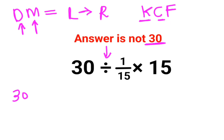C stands for changing the division sign to multiplication. And F stands for taking the reciprocal, which is reciprocal of 1/15 is 15 times 15.